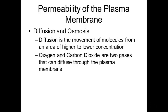In this video we're going to talk about diffusion and osmosis and other ways in which materials get into and out of our cells. If you're breathing, you've got oxygen moving from the air into your red blood cells and carbon dioxide leaving your body going into the air. This happens because of a difference in concentration — oxygen flows from higher to lower concentration, and that's called diffusion.